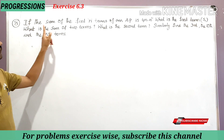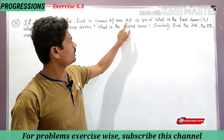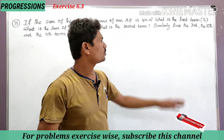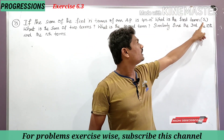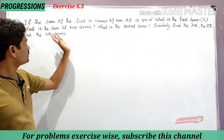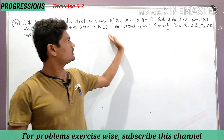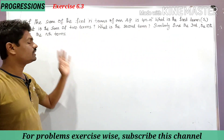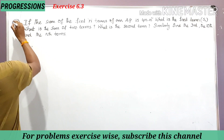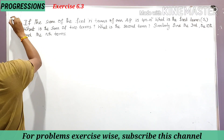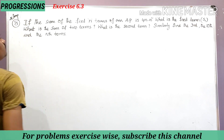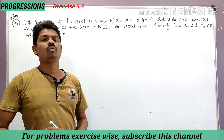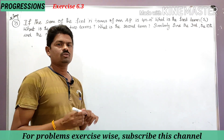The problem states: if the sum of the first n terms of an arithmetic progression is 4n minus n², what is the first term? Also find the sum of two terms, the second term, the third term, the tenth term, and the nth term. This is a very important problem that has been asked two or three times before.